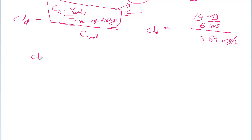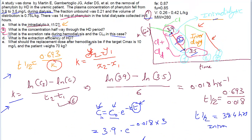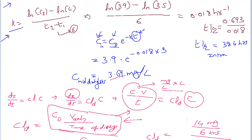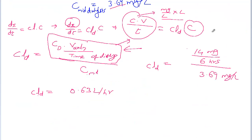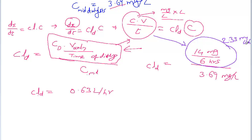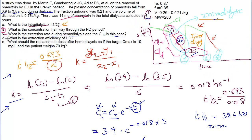Solving this, clearance during dialysis is 0.63 liters per hour. But if you just want the excretion rate during dialysis, you simply compute 14 divided by 6, which gives 2.33 mg per hour. So the excretion rate (dX/dt = C × V / T) is 2.33 mg/hr, and the clearance during dialysis is 0.63 L/hr.